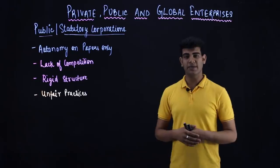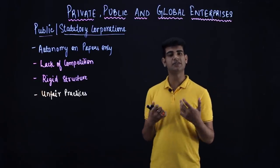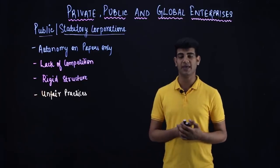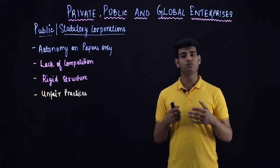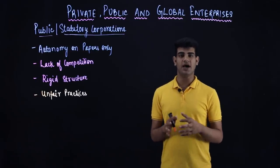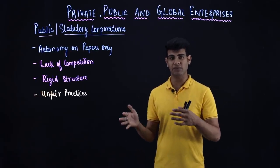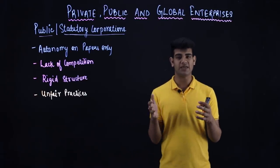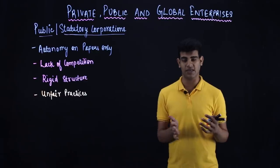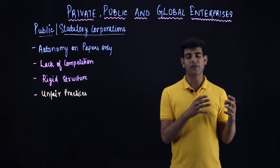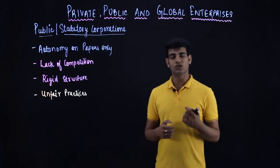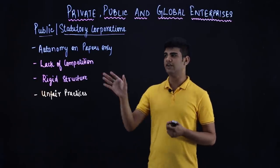The first demerit is that autonomy is on paper only. Although in theory they have full autonomy and managers can make decisions, because the board of directors is appointed by the government, managers cannot do any work without the permission of directors. So indirectly, the government has influence on these managers, making the autonomy only on paper.